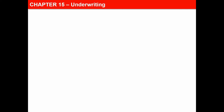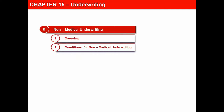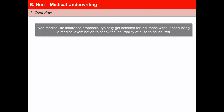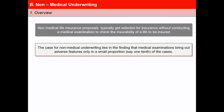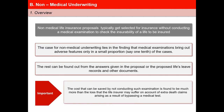In this next video of the lesson Underwriting, we will discuss various aspects of non-medical underwriting. Non-medical life insurance proposals typically get selected for insurance without conducting any medical examination. The case for non-medical underwriting lies in the finding that medical examinations bring out adverse features in only a very small proportion — say one-tenth of the cases. The cost saved by skipping such examinations is much more than the loss a life insurer may suffer on account of extra death claims arising from bypassing a medical test.